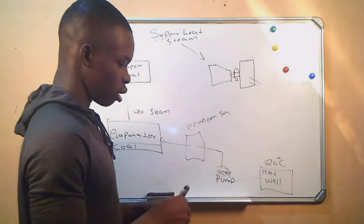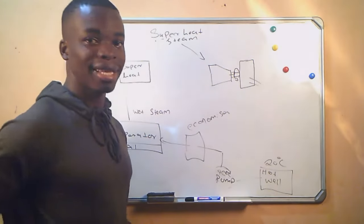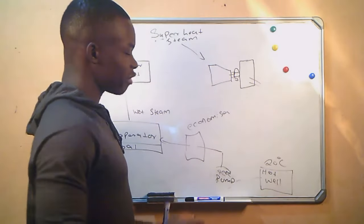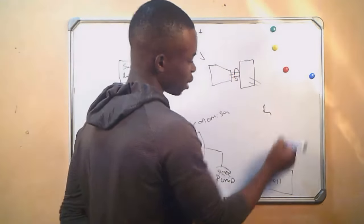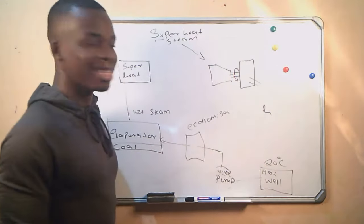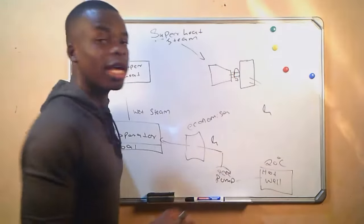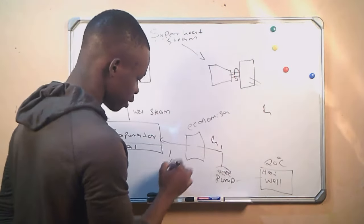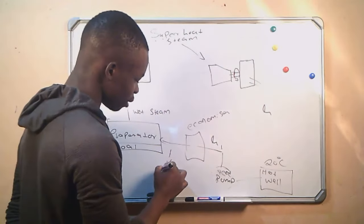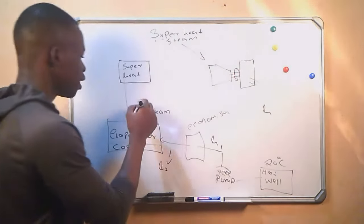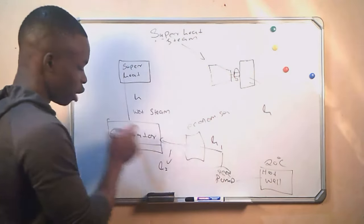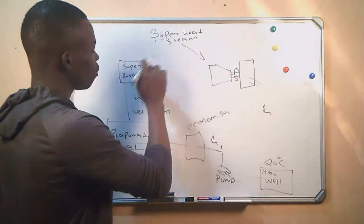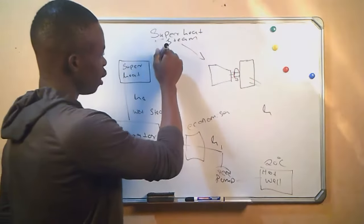We know the heat energy of steam or water is represented by H, which is enthalpy. The enthalpy of water before the economizer is H1. The enthalpy of the water after the economizer is H2. The enthalpy of the steam after the evaporator is H3. And the enthalpy of the steam after the superheater is H4.